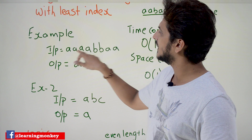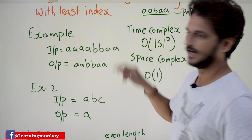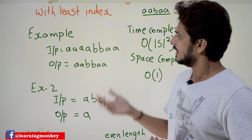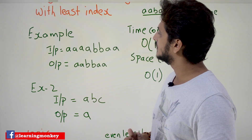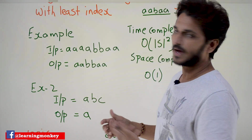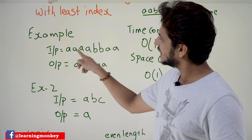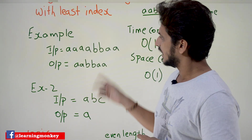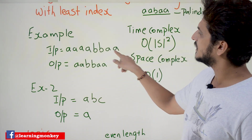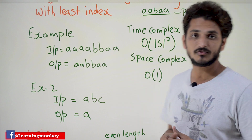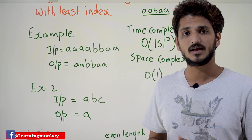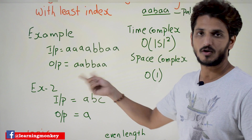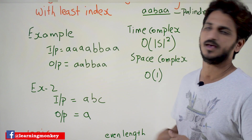Now coming to the example — input is AABBAA. In this input, we have multiple substrings that contain palindromes. One substring is ABBA which is of length 4. Another substring is AABBAA which is of length 6. So the output we have to display is AABBAA.